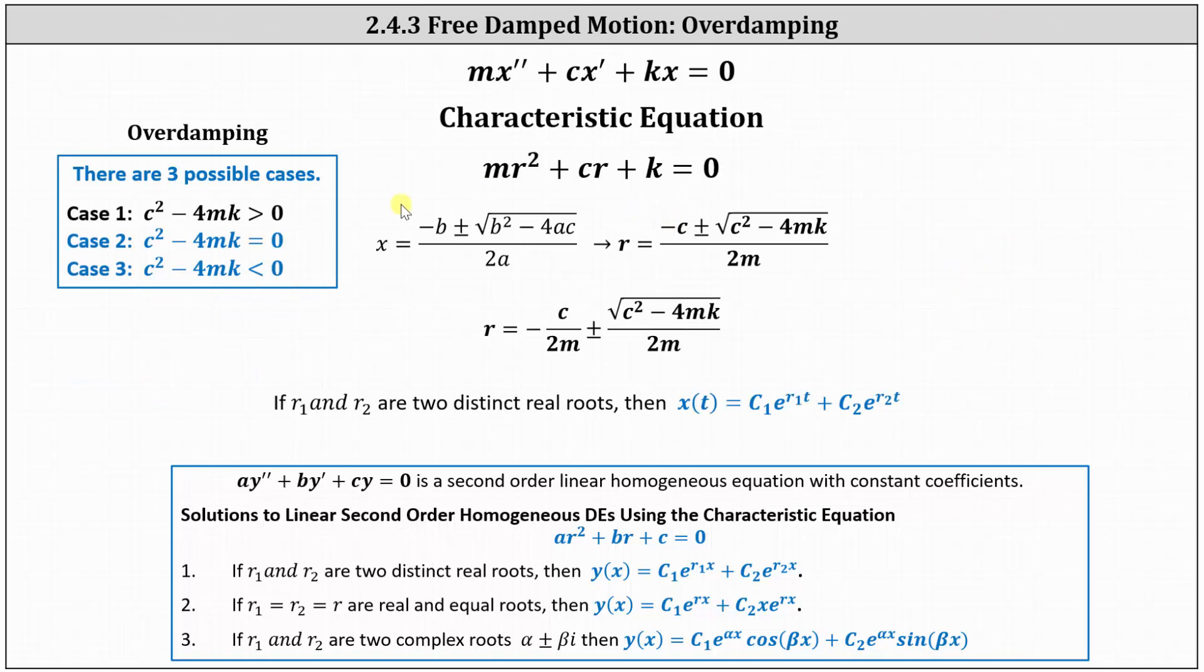The first case is when c squared minus 4mk is greater than zero, so the discriminant under the square root is positive. We have two real distinct roots, r sub one and r sub two, and therefore the general solution is x of t equals c sub one times e to the r sub one times t plus c sub two times e to the r sub two times t.